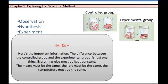Here's the important information. The difference between the control group and the experimental group is just one thing. Everything else must be kept constant. The meats must be the same, the jars must be the same, the temperature must be the same.